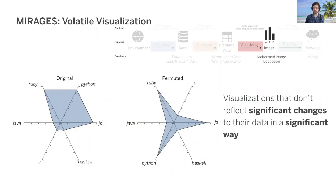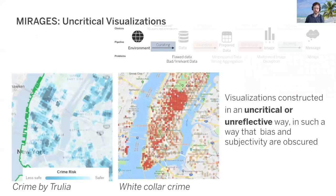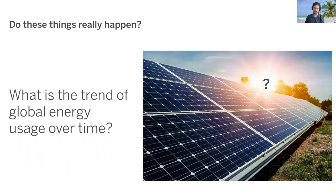Mirages can come from volatile visualizations — those that don't reflect changes to their data or cause the reader to hallucinate meaning. For instance, arbitrary choices about axis ordering in a radar chart could cause a reader to falsely believe one job candidate is good while another is lacking. To wit, which of these two candidates is better? Answer: they are the same candidate. Mirages can also come from creating visualizations with uncritical or unreflective eyes. For instance, decisions about what type of crime actually counts as a crime can lead to maps that drive radically different impressions about the role of crime in a particular area. As here, homebuying website Trulia gives a radically different depiction of which parts of New York are dangerous, compared to a similar map highlighting white-collar crime.